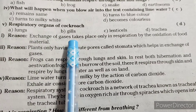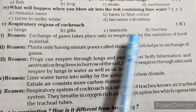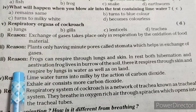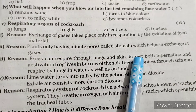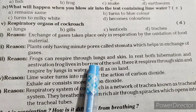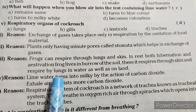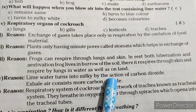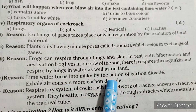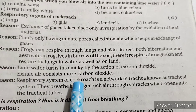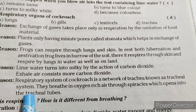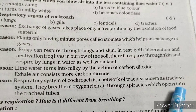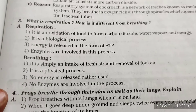Reasons: First, exchange of gases takes place only in respiration by the oxidation of food material. Second, plants have minute pores called stomata which help in exchange of gases. Third, frogs can respire through lungs and skin — during hibernation and estivation, the frog lives in a burrow and respires through skin; it also respires through lungs in water and on land. Lime water turns milky by the action of carbon dioxide — exhaled air contains more carbon dioxide. The respiratory system of cockroach is a network of trachea called the tracheal system; they breathe oxygen-rich air through spiracles which open into the tracheal tubes.